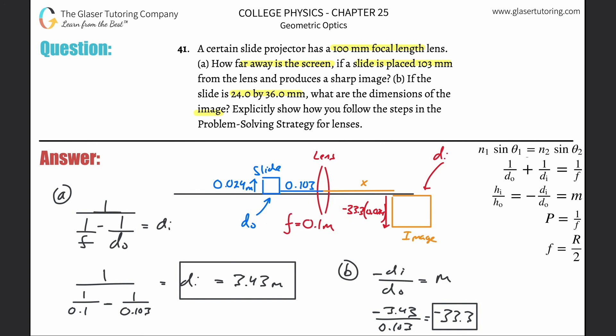I'm taking m and multiplying it by the height: -33.3 × 0.024 = -0.8 meters. The negative sign just tells us direction, so that's 0.8 meters.